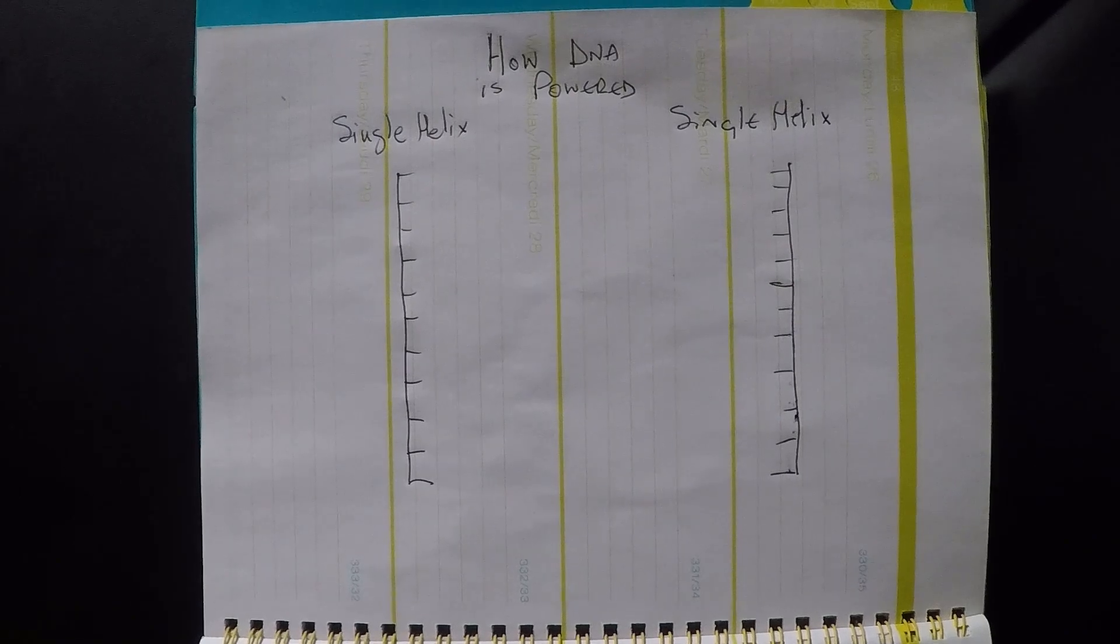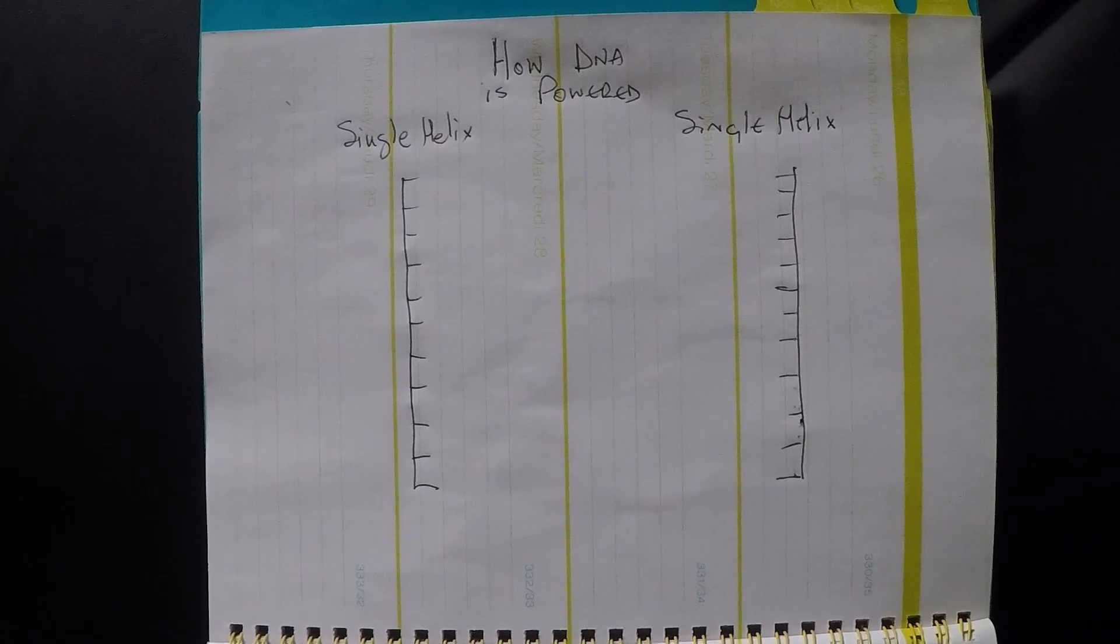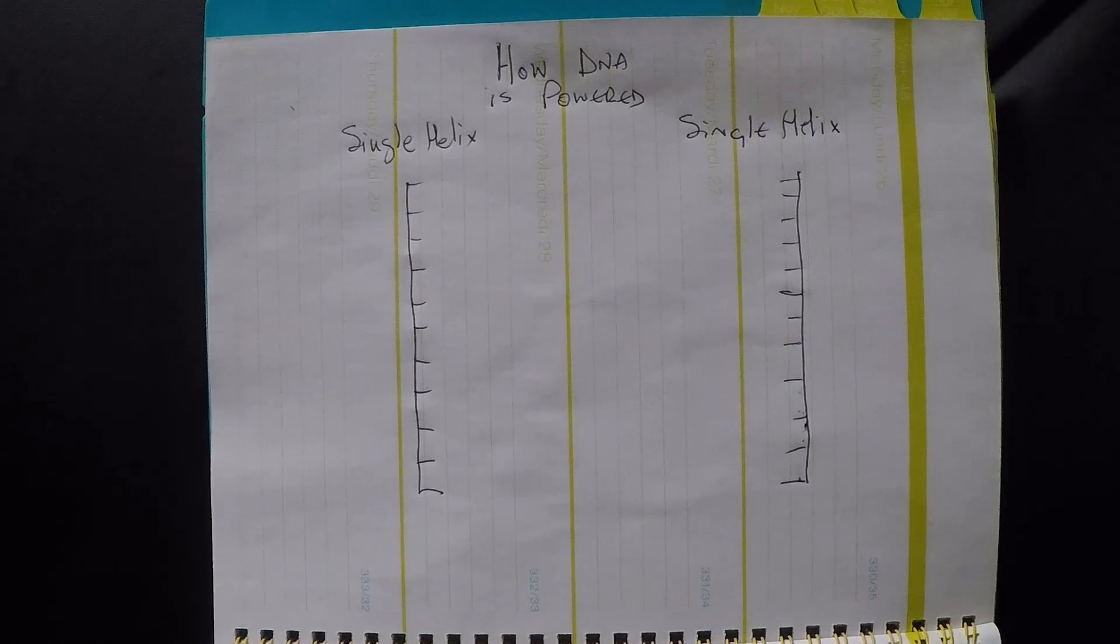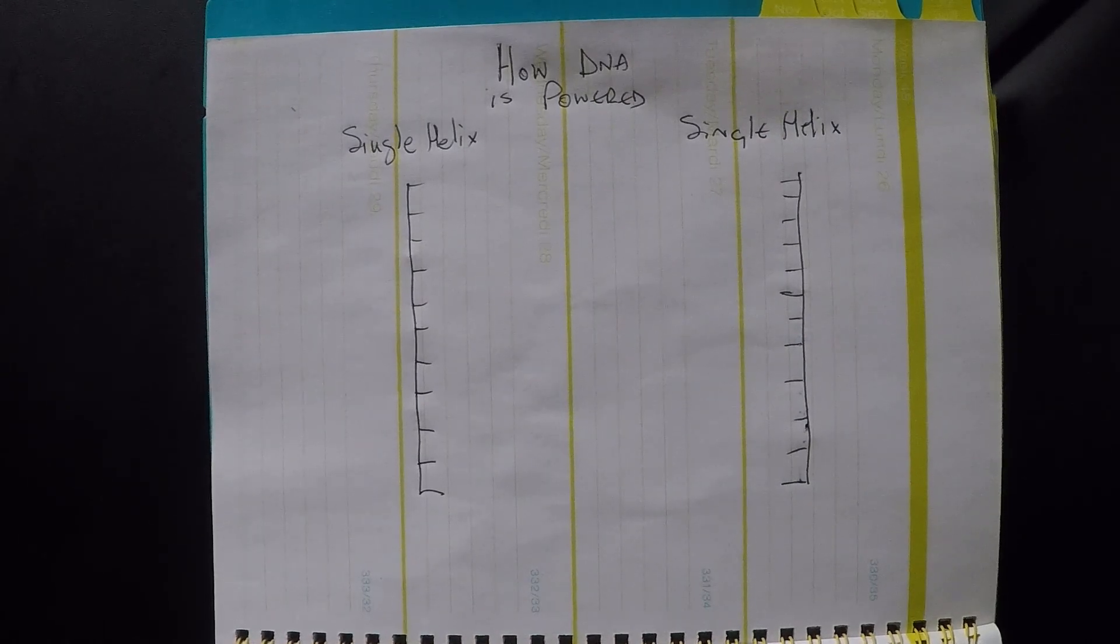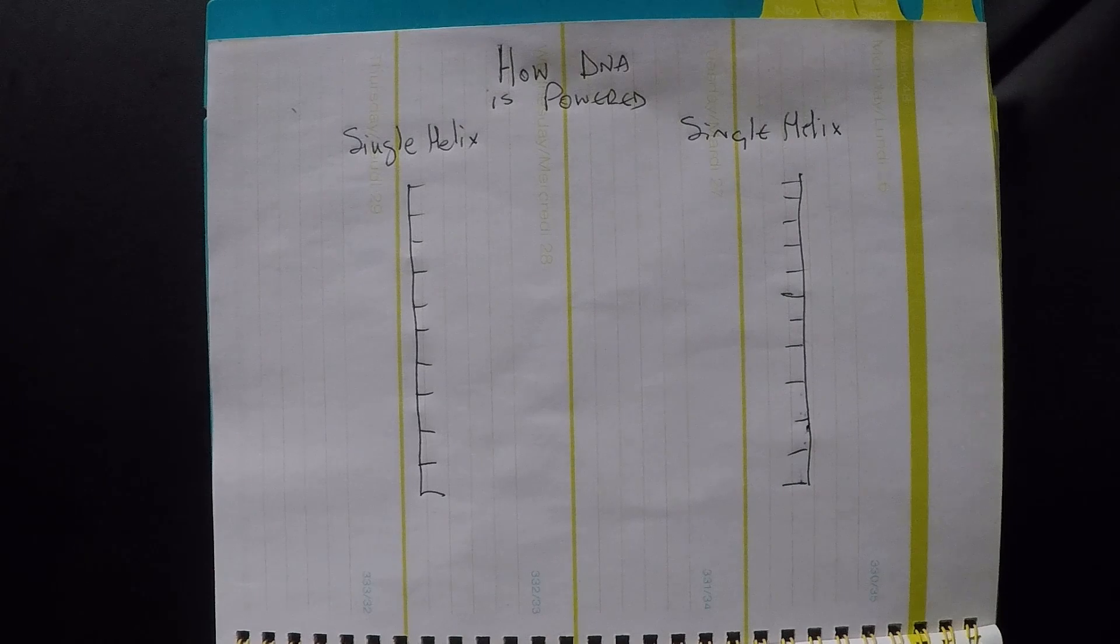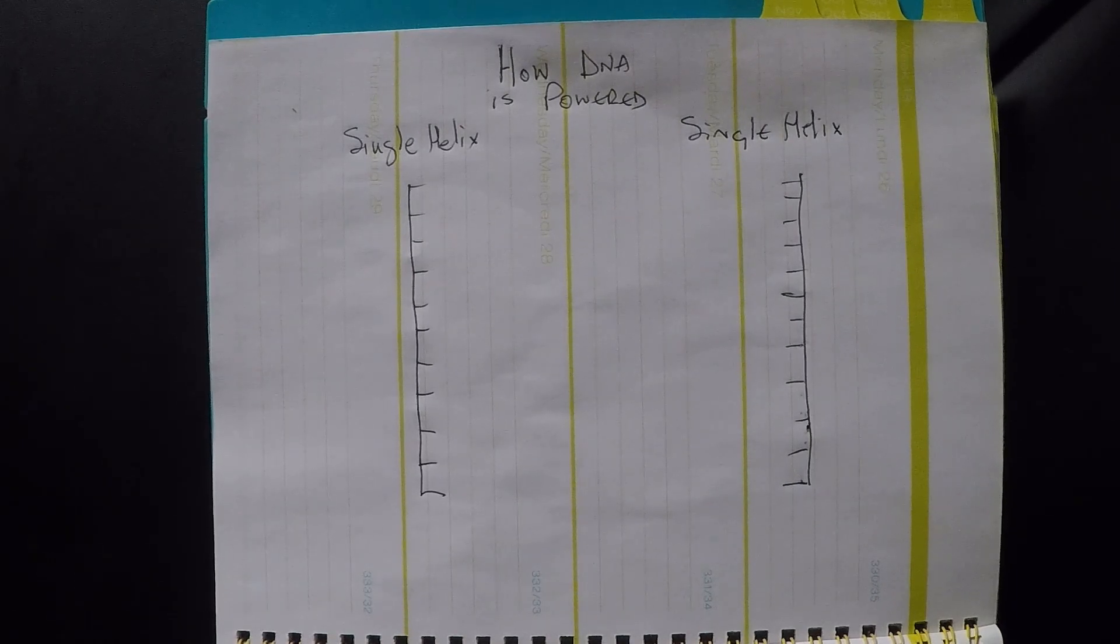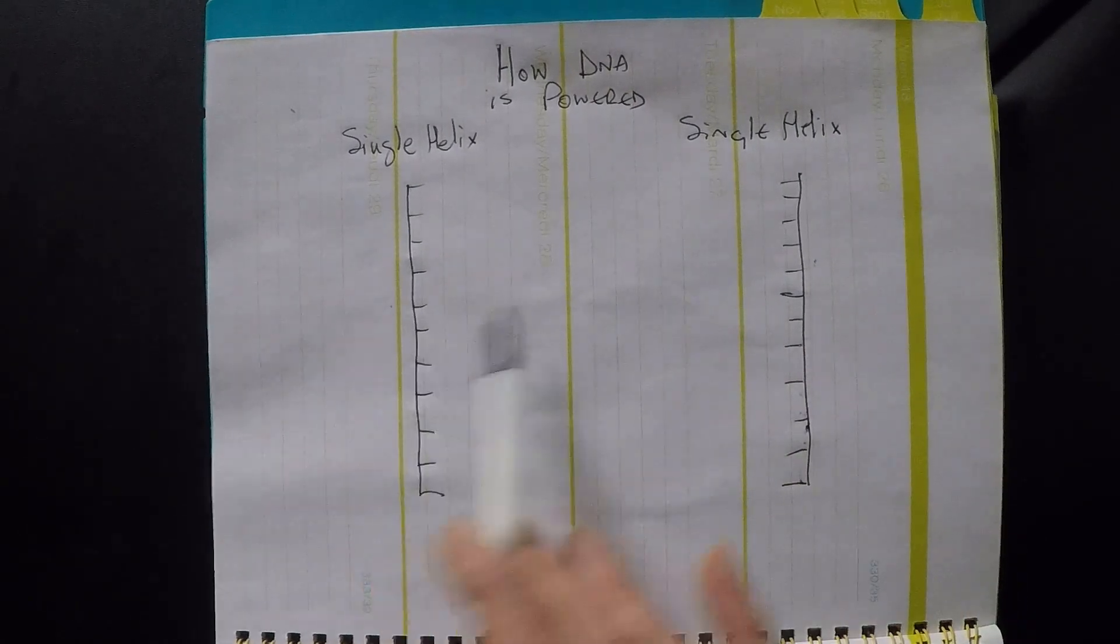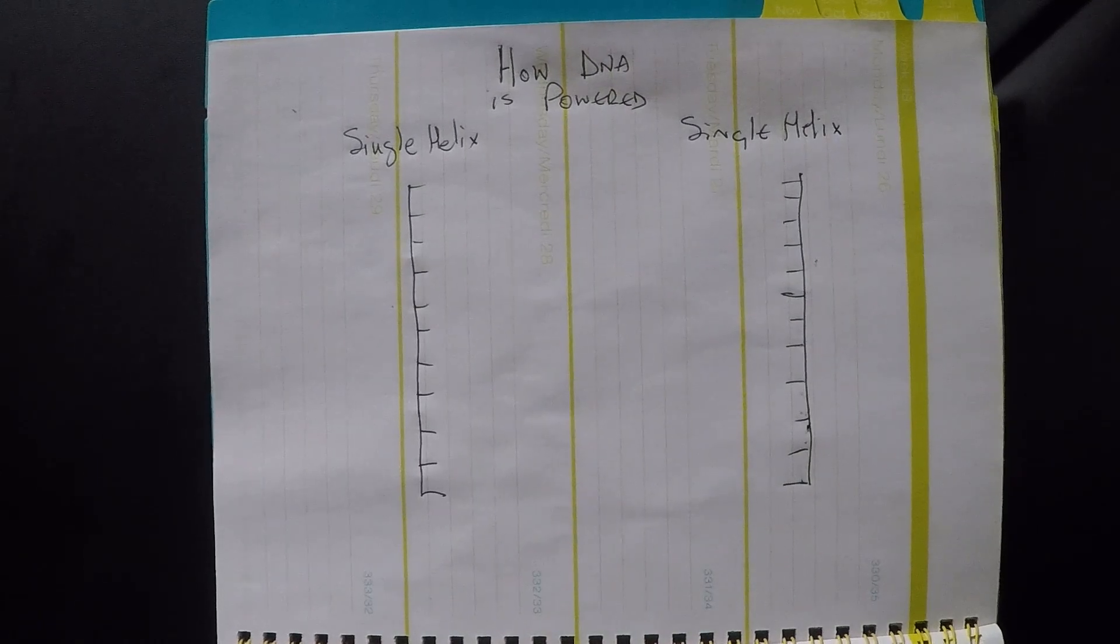Hello and welcome to Scientifically Speaking. Today in a world first, I'm going to tell and show exactly how DNA in a fertilized human egg—I'm going to explain how two single helixes become one double helix.